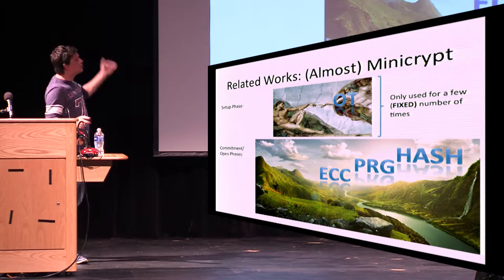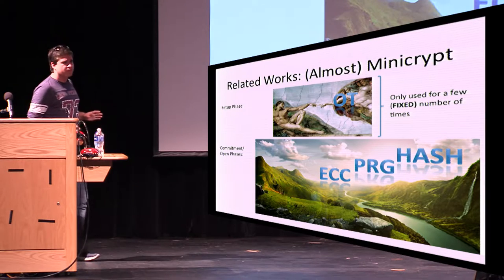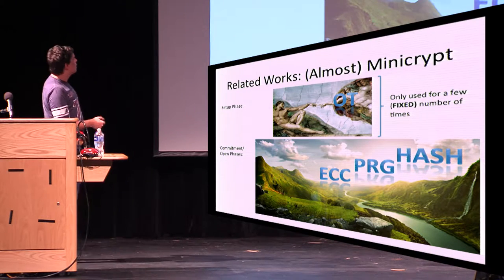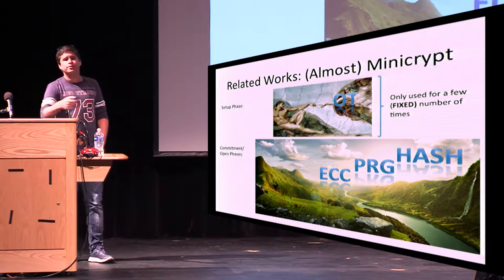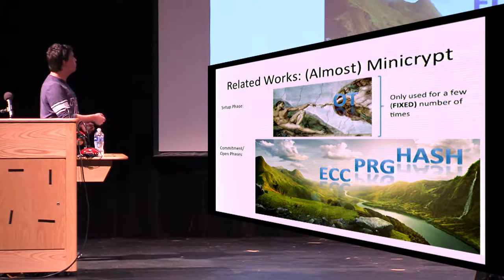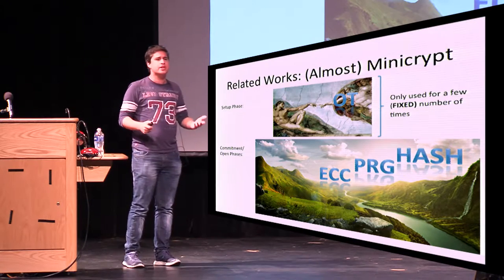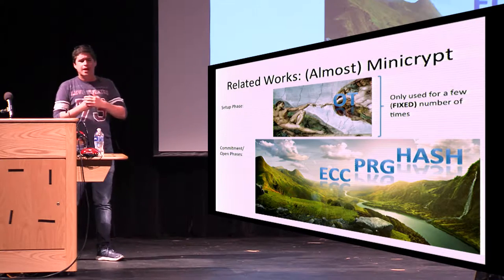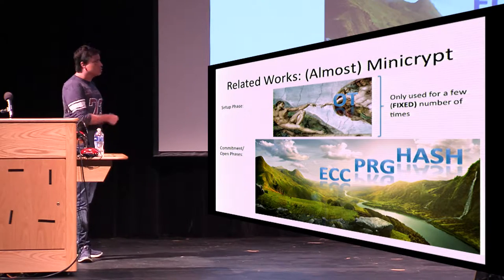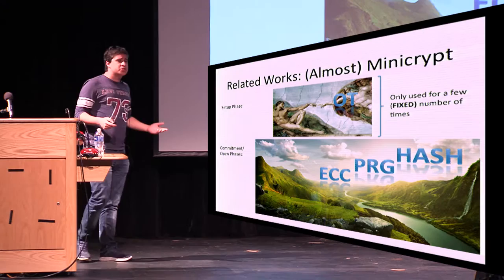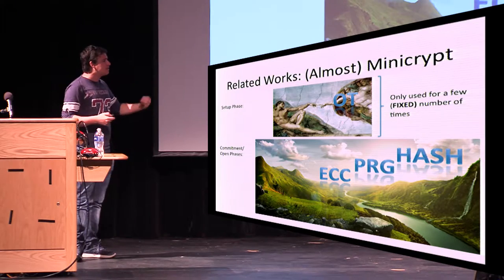Now, how do we do that? This is our general framework. As a setup assumption, we have OT. We assume a setup phase. We do the setup phase, where we do a fixed number of OTs only. And after that, we can do an unbounded, of course, a polynomial number of commitments that only use primitives in Minicrypt. After the initial OTs, which we can really minimize using OT extensions, so let's say we do 200 OTs. After that, we can just use error-correcting codes, pseudorandom generators, and hash functions to commit to an arbitrary number of messages, which is nice because then the complexity of these 200 OTs gets amortized over the number of messages that we commit to.